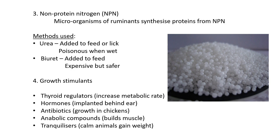Two common NPN sources are urea and biuret. Urea is usually added to feed or a salt lick, but it can be poisonous when wet. With cattle, salt licks containing urea must be placed where rain can't reach them, otherwise the urea dissolves in pooled water and animals may drink it, which can be very poisonous. Biuret looks like small white pearls and is also added to feed as an NPN source. It's more expensive than urea but safer, because it is not dangerous when wet.